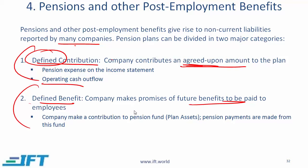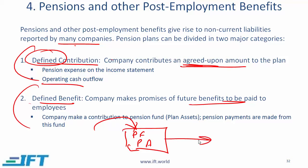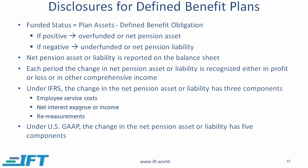To meet those obligations, most companies set up a pension fund, also called plan assets. Companies put money into this fund and pension liabilities or obligations are paid from it. The accounting for defined benefits is very complex, and from an analyst's perspective when reviewing balance sheets and income statements you need to be able to interpret what companies are doing.